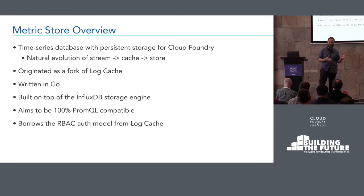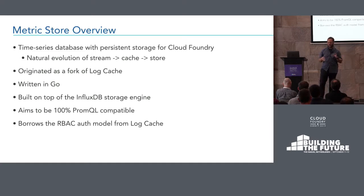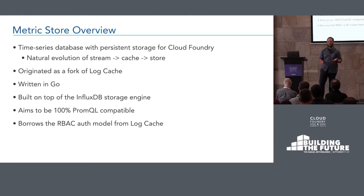Originally it was just a fork of LogCache — we just took the whole thing, forked it, and started modifying it in place. It has now diverged quite a bit; you probably wouldn't recognize the two codebases as very similar, but there are still some authentication design patterns that we use which are the same as what LogCache uses. It's written entirely in Go, and for the storage side, we actually used the storage engine from InfluxDB directly. Basically everything below the Influx query engine — that's how we're actually storing data on disk. It gave us the hardest piece for free: compressed, sharded time-series storage from a relatively mature project.